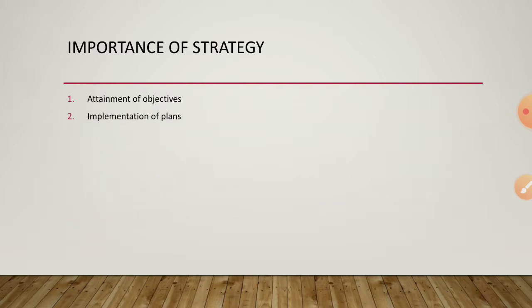The second importance is implementation of plans. Strategy provides guidelines for efficient implementation of plans and course of action. Once you have made a strategy, it is not done — you have to implement it properly, and after implementation it should reach its purpose. For implementing it, a series of actions is outlined. Strategy provides direction on how to implement a plan and how to carry out various activities.